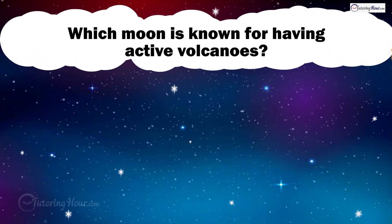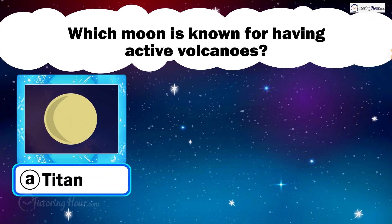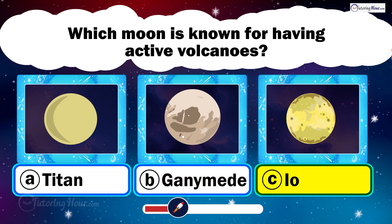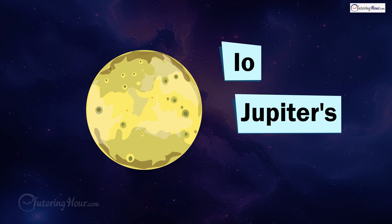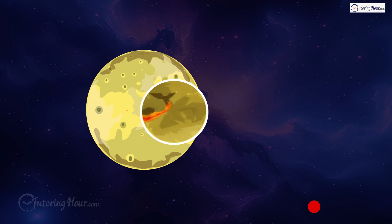Which moon is known for having active volcanoes? Is it A. Titan, B. Ganymede, or C. Io? The correct answer is Io. Io, a moon of Jupiter, has hundreds of active volcanoes with erupting lava fountains.